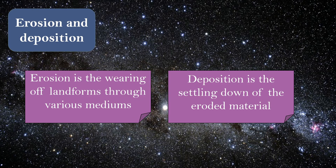Erosion is the wearing of landforms through various mediums, and deposition is the settling down of eroded materials. Because of various mediums like harsh conditions, the landforms wear off and the soil gets eroded away. Once those mediums come to a stop, the material is deposited and settles down to form new landforms. Sometimes erosion alone is also responsible for the formation of a few landforms.